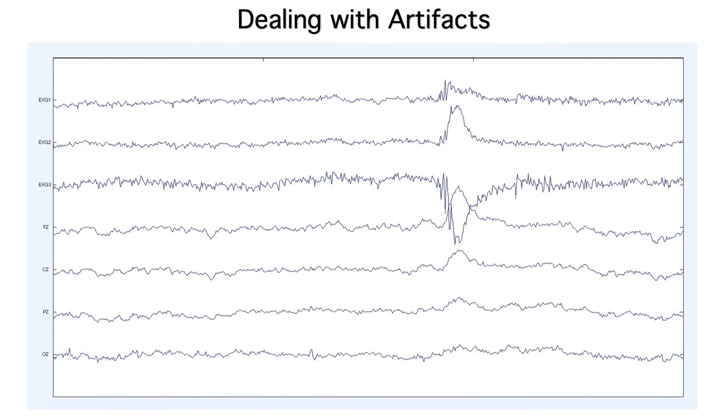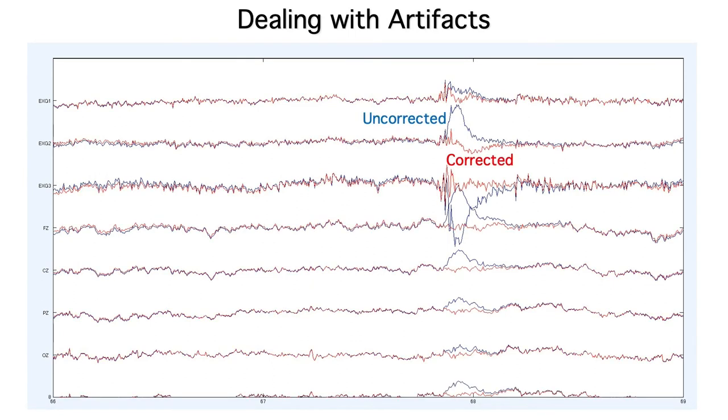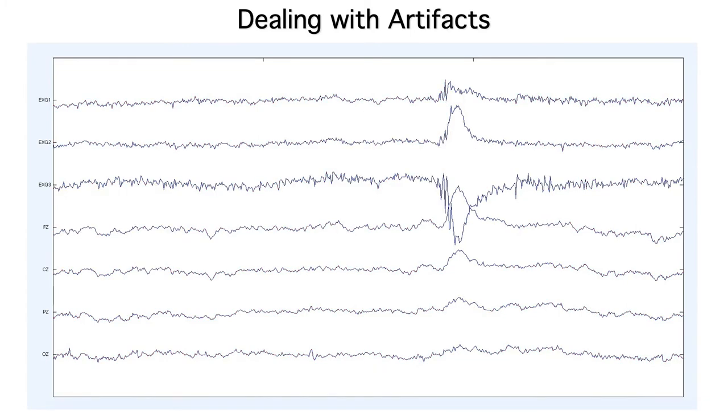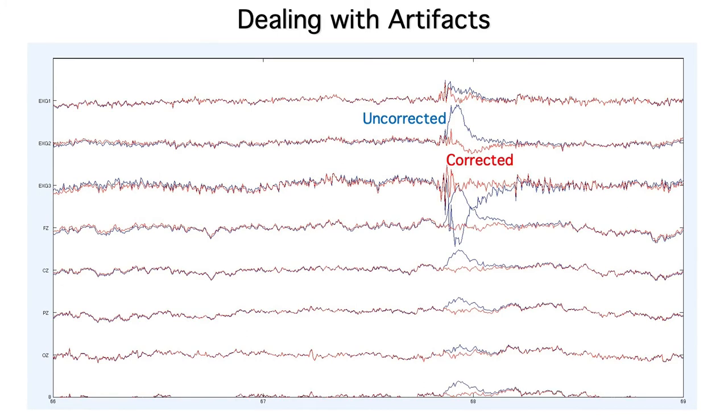Third, we can try to estimate the artifactual voltage and subtract it from the single trial EEG data. This is called artifact correction. This example shows a segment of EEG from multiple channels at the time of a blink. And here's what the corrected waveforms look like after we subtract out the blink-related activity. You can see the same EEG, but without the blink artifact.